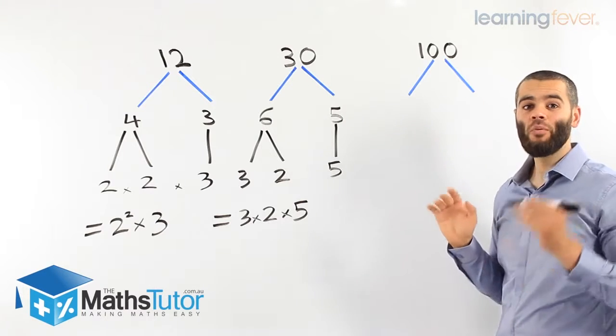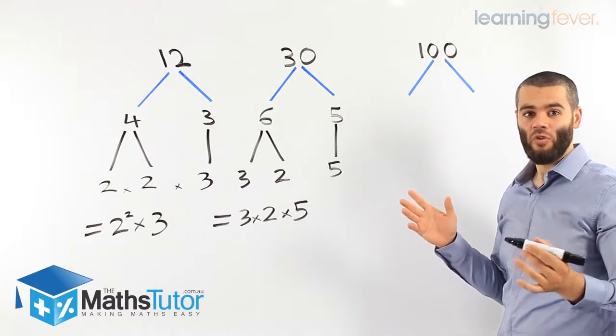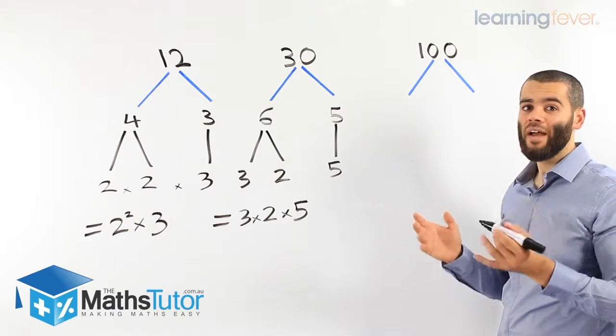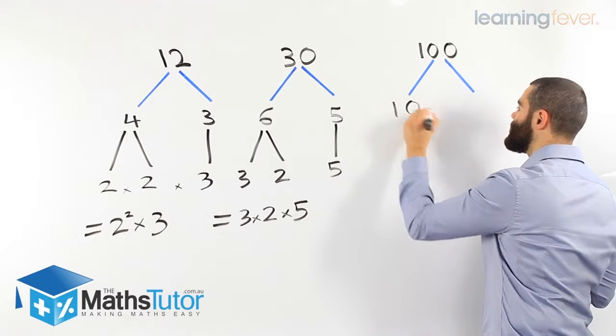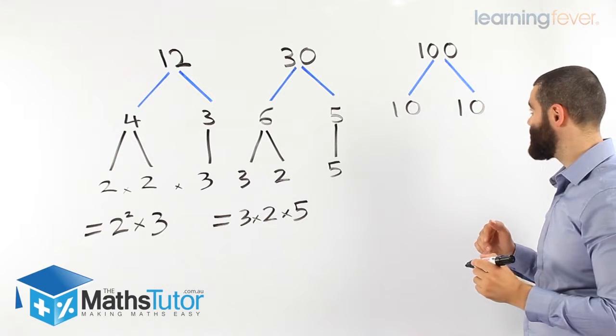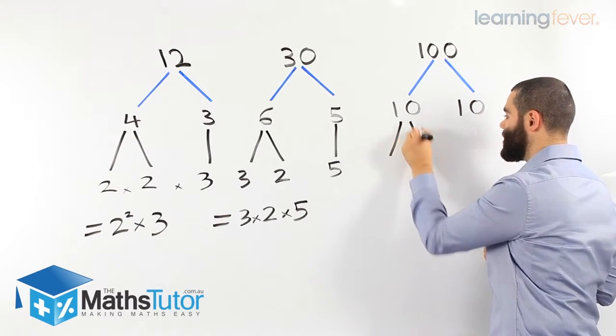This is now 100. We want to know the factors of 100. Again you can use 25 and 4, you can use 20 and 5, and you can use 50 and 2, any of the factors of 100. I'm going to choose to make it simple for me, 10 and 10. 10 times 10 make 100. I know that 10 is a composite number, it can be broken down even further.